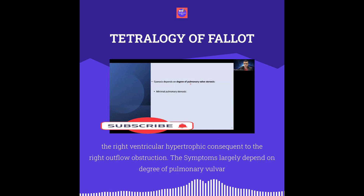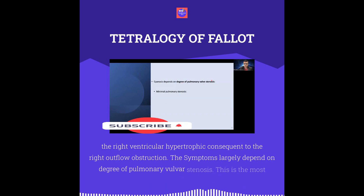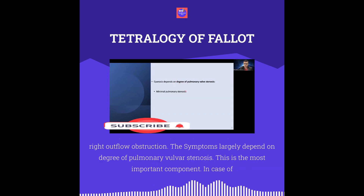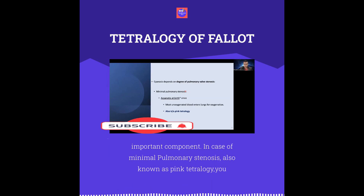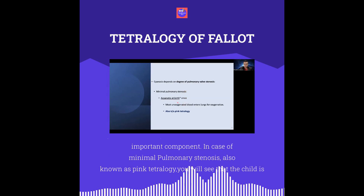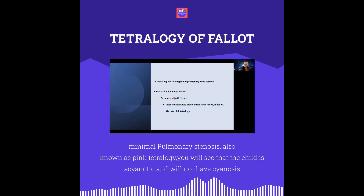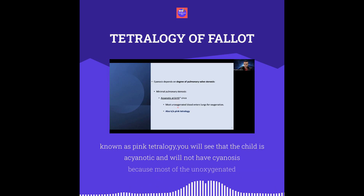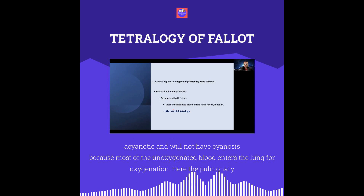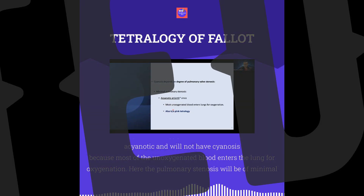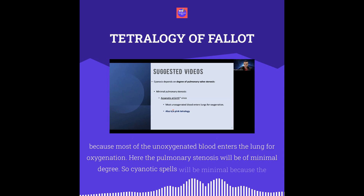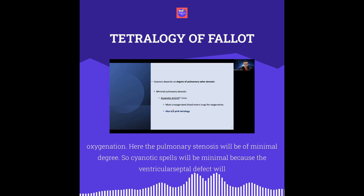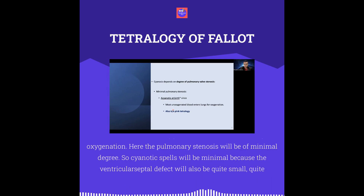The degree of cyanosis largely depends on the degree of pulmonary valvular stenosis. In cases of minimal pulmonary stenosis — also known as pink tetralogy — the child is acyanotic and will not have cyanosis, because most of the unoxygenated blood enters the lungs for oxygenation. Cyanotic spells will be minimal, and the VSD will also be quite small and trivial.